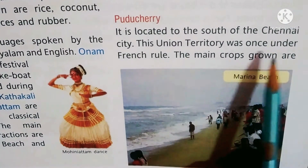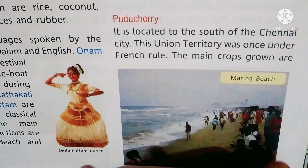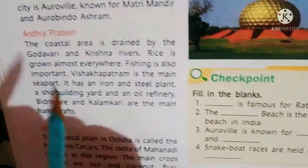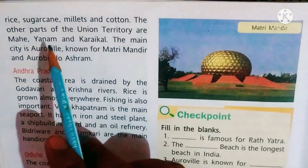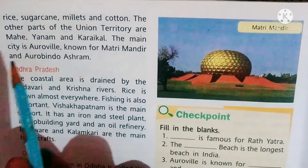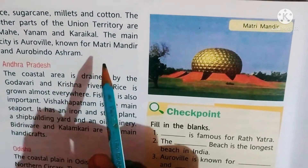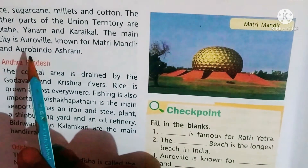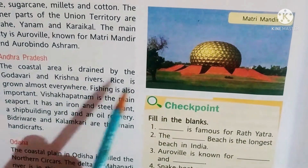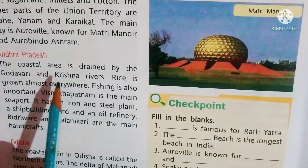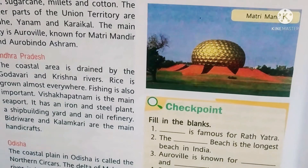Pondicherry was once under French rule. The main crops are rice, sugarcane, millets, jowar, and cotton. Auroville is a well-known city in Pondicherry, known for the Matri Mandir and the Aurobindo Ashram.